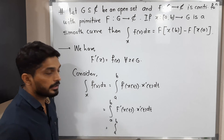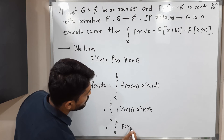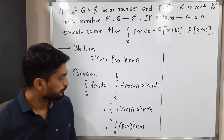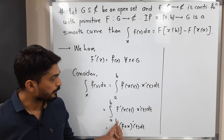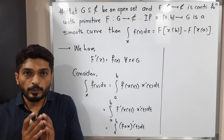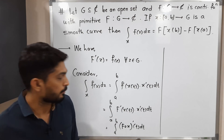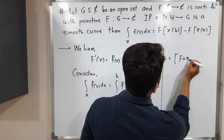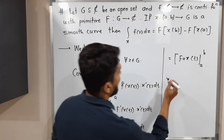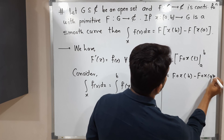Here the chain rule is used: the derivative of the outer function capital F composed with the inner function γ, times the derivative of the inner function. So we can write this as the integral from a to b of (F ∘ γ)'(t) dt. Now by the fundamental theorem of calculus, the derivative and integration cancel each other, and we can directly write F ∘ γ evaluated with lower limit a and upper limit b. Putting the upper limit first and then the lower limit gives us F(γ(b)) minus F(γ(a)).